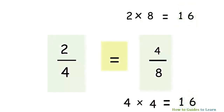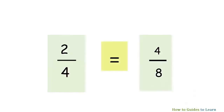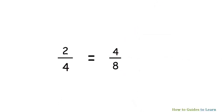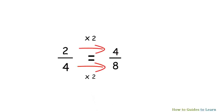In math, there are always different ways to arrive at an answer. Let's analyze two by four and four by eight in another way. When we multiply the numerator and denominator of two by four by two, we get four by eight. So two by four and four by eight are equivalent fractions.